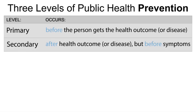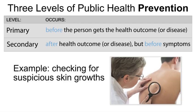Secondary prevention occurs after a disease has occurred, but before the person notices symptoms. Secondary prevention aims to find and treat disease early, which may lead to the disease being cured. An example of secondary health prevention is a doctor checking for suspicious skin growth in order to detect and treat skin cancer early.